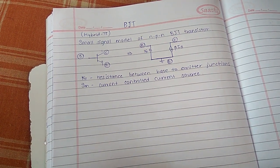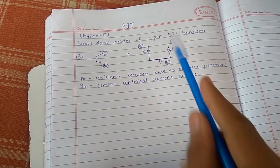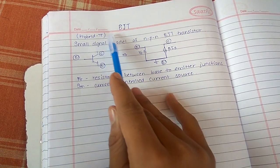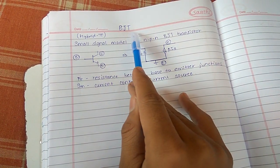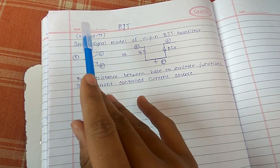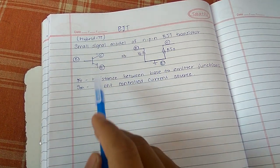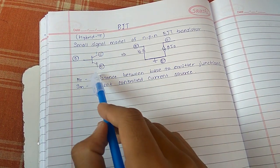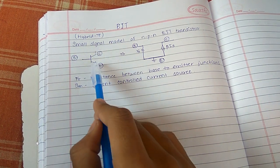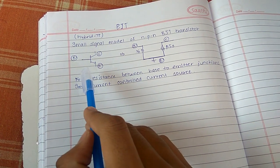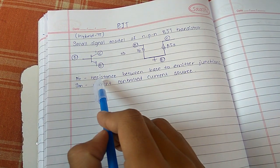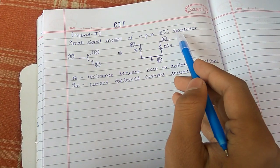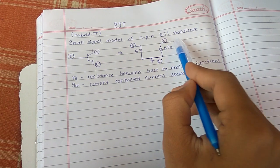Today we will learn about the hybrid pi model of bipolar junction transistor. I am not going through the basics of the BJT — I am going to explain just the hybrid pi model of it. This is the equivalent model of bipolar junction transistor, with base, collector, and emitter. Now the hybrid pi model of this bipolar junction transistor looks something like this.